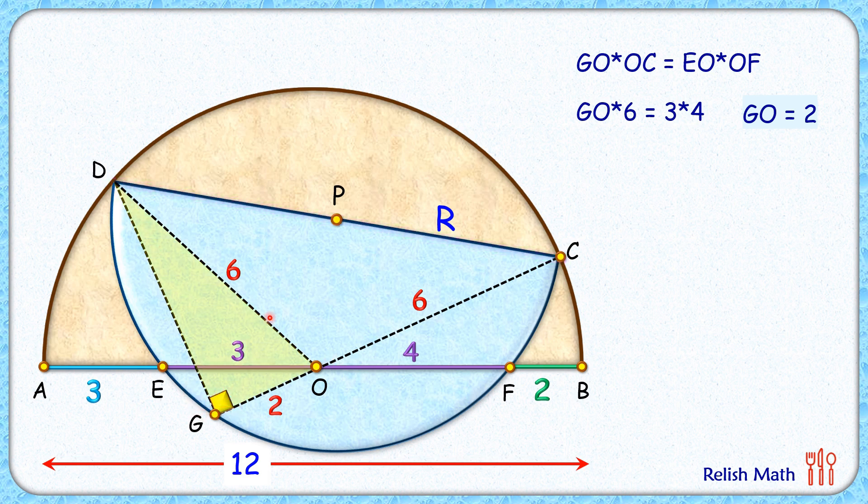If we look at triangle DGO and apply Pythagoras theorem, we get DG is square root of 6 squared minus 2 squared. So that's square root of 32 or 4 root 2 cm.